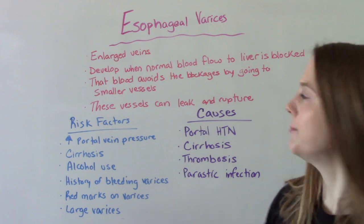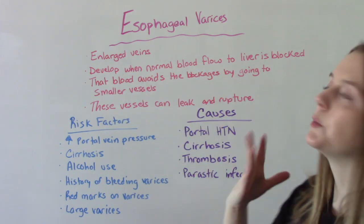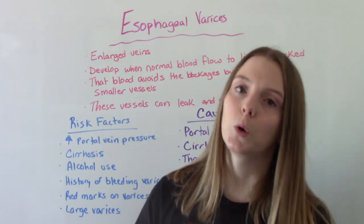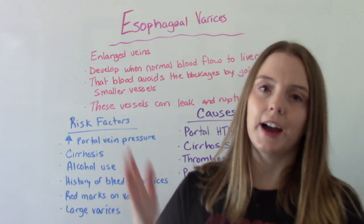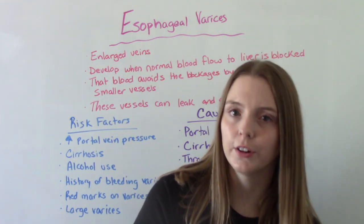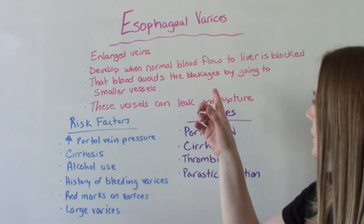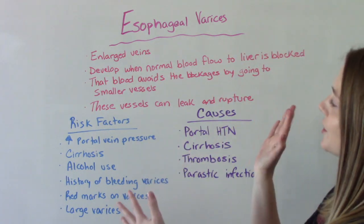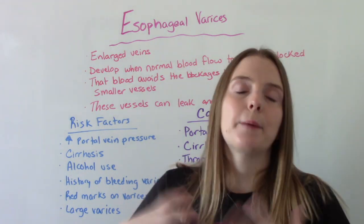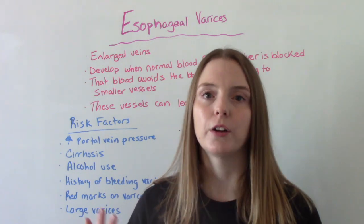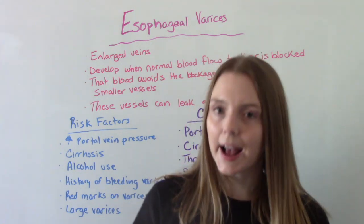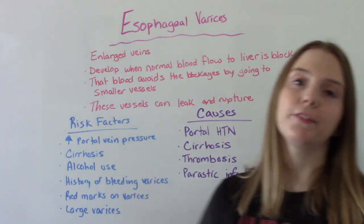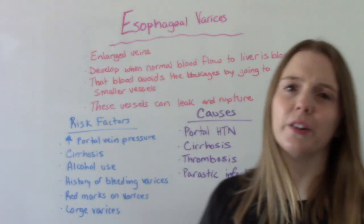How do these happen? When the normal blood flow to the liver is blocked by something — it could be scar tissue, it could be a blood clot — the blood starts going through the smaller vessels, taking a detour. But these smaller vessels are not made to accommodate that much blood flow, and they can start leaking and even rupture, which can be life-threatening. So esophageal varices are very important to know.